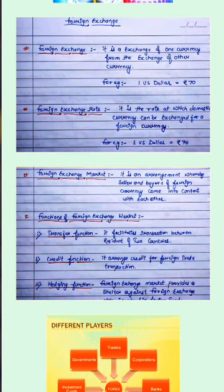Now coming on to foreign exchange rate — what is it? It is the rate at which domestic currency can be exchanged for a foreign currency. For example, exchanging 70 rupees for a dollar — that is the exchange rate. It is also called the foreign rate of exchange, and it represents the external purchasing power of a currency. It is the rate at which exports and imports of a nation are valued at a given point of time.